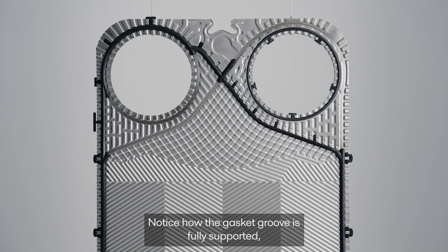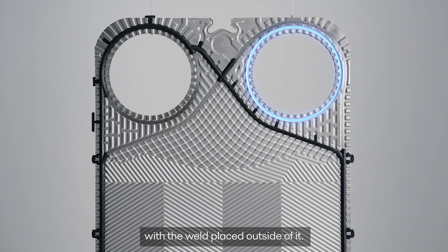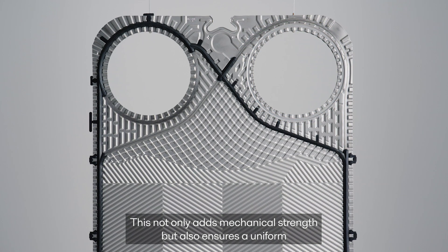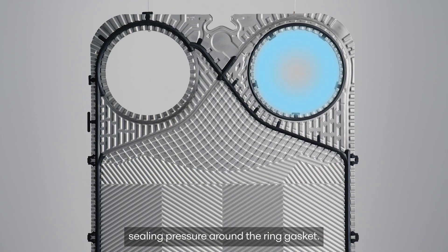Notice how the gasket groove is fully supported, with the weld placed outside of it. This not only adds mechanical strength, but also ensures a uniform sealing pressure around the ring gasket.